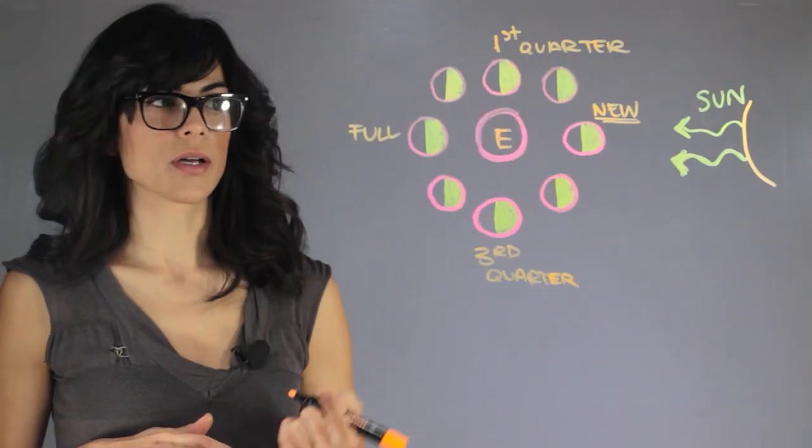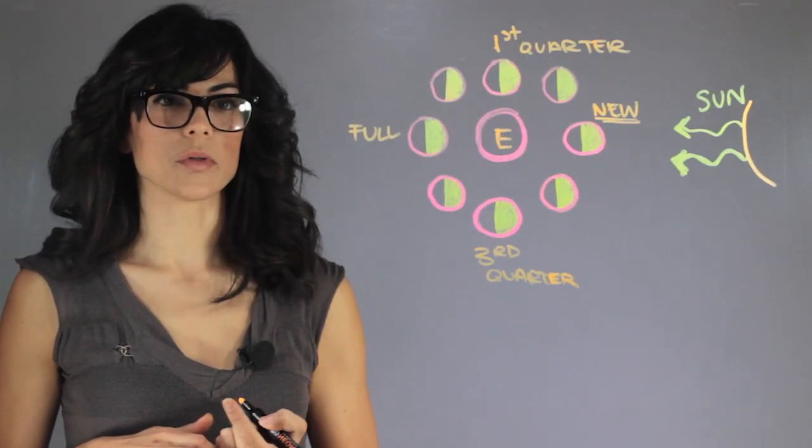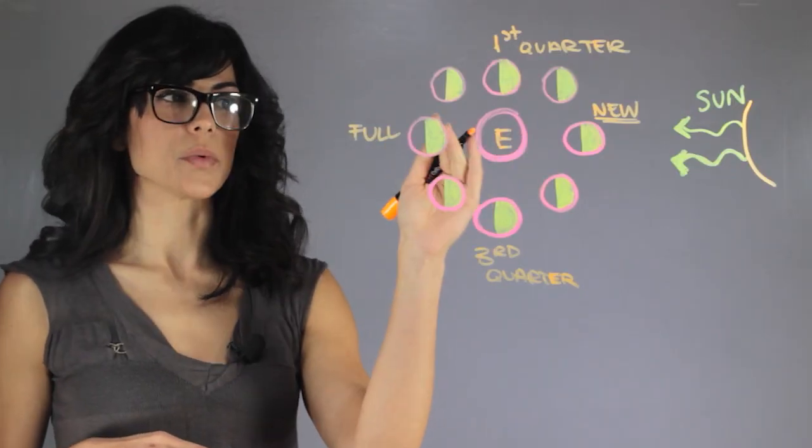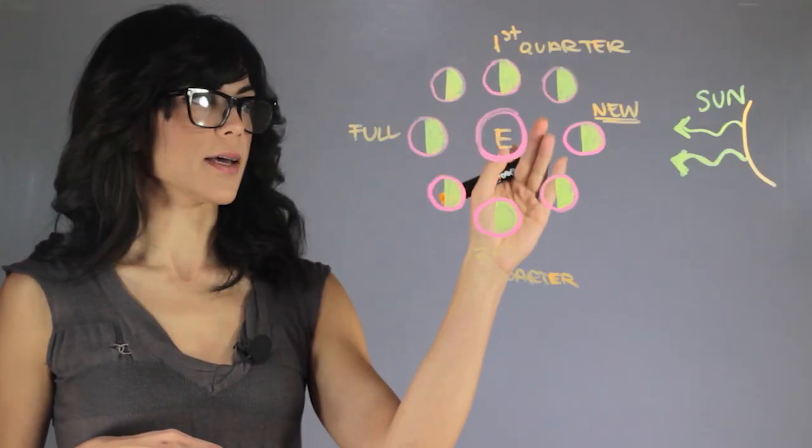Then we move on to first quarter, and then here we have the full moon. So full moon occurs when you have the earth between the moon and the Sun.